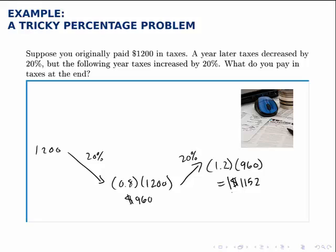So as we expected, the final amount is lower than what you started with. Because again, you begin by decreasing by 20% of 1,200, and then the increase is only 20% of this smaller amount. So the amount that it goes up is less than the amount that it goes down. So you end up with a lower total at the end.